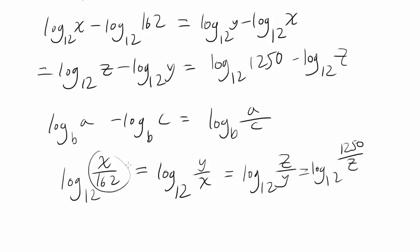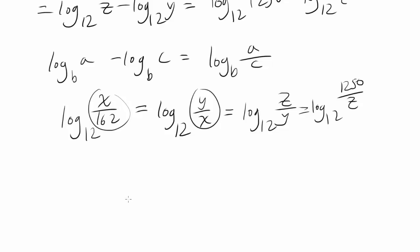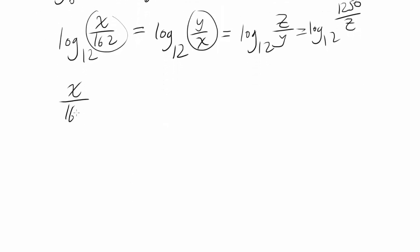Log base 12 of X over 162 is equal to log base 12 of Y over X, and since logs are one-to-one, that's telling you X over 162 and Y over X are the same. For logs, when you graph it, for each value of Y, there's only one corresponding value of X. If we plug in X over 162 and Y over X into log base 12 and got the same thing out, the inputs must have been the same to begin with. So these two are the same, and continuing, Z over Y is also the same, and 1250 over Z is also the same.